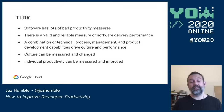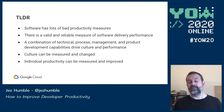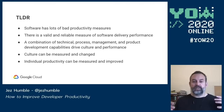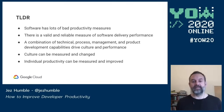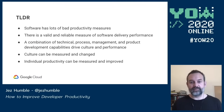First of all, we have lots of bad productivity measures in software, and I'm going to talk about those and why they're bad. There is, however, a good and valid and reliable way to measure software delivery performance. In order to get better at software delivery performance, there's a combination of technical, process management, and product development capabilities that you can invest in, which will drive improved culture and improved performance.